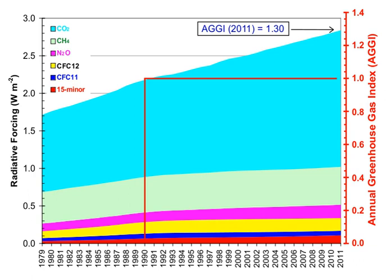Human activities since the beginning of the Industrial Revolution have produced a 45% increase in the atmospheric concentration of carbon dioxide, from 280 ppm in 1750 to 406 ppm in early 2017. This increase has occurred despite the uptake of more than half of the emissions by various natural sinks involved in the carbon cycle.